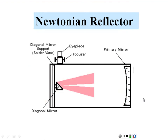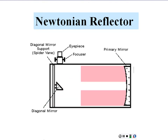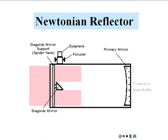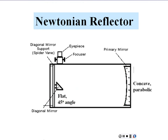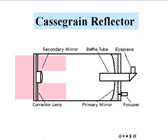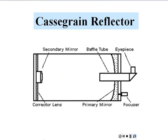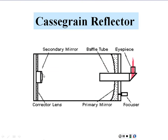Here's how light travels through a Newtonian reflector: light comes in, reflects off the primary mirror, heads toward a focus straight back, but is intercepted by a flat diagonal mirror at a 45-degree angle, then redirected perpendicularly to an eyepiece. And here's the Cassegrain reflector: light comes in, reflects off the main concave mirror, hits a convex secondary mirror near the opening, and is directed back through a hole in the main mirror to your eye.